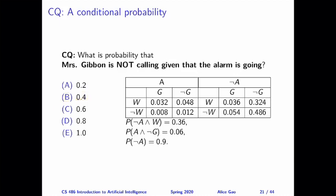Here's the second question: we want to calculate the probability that Mrs. Gibbon is not calling given that the alarm is going — P(¬G | A). The correct answer is 0.6.